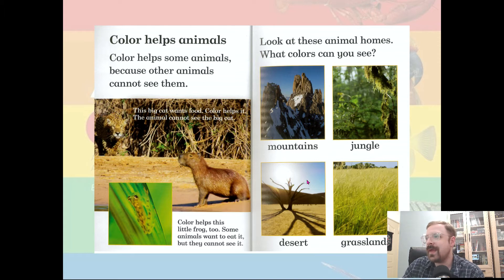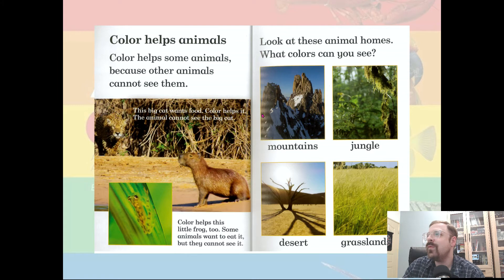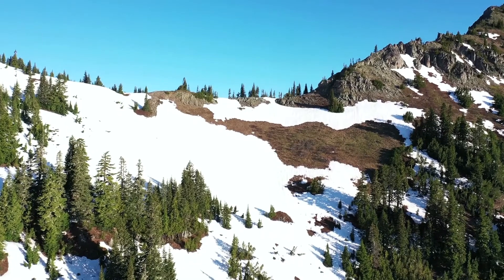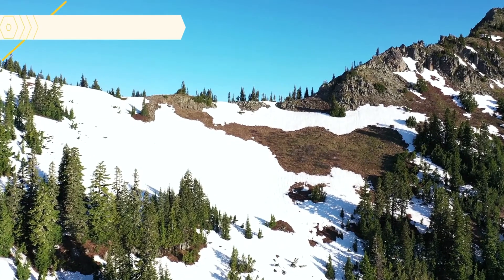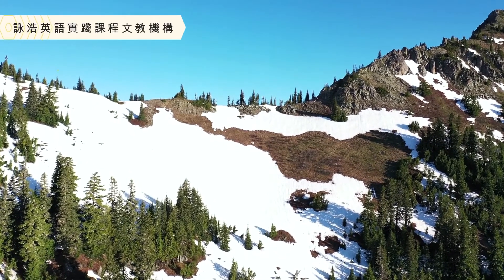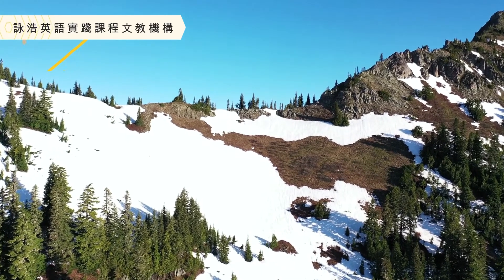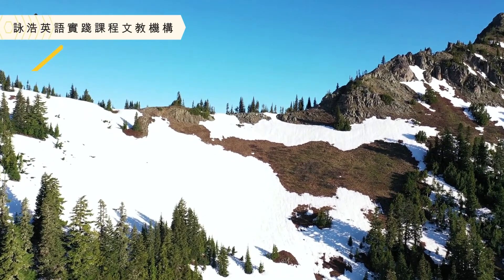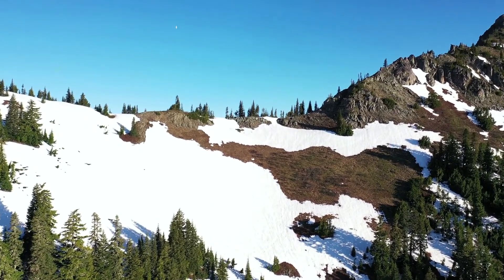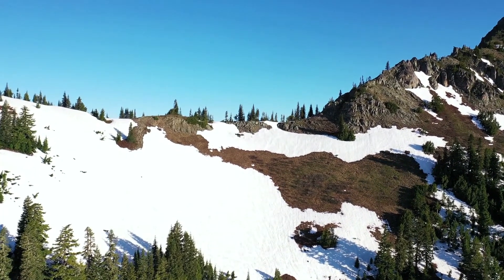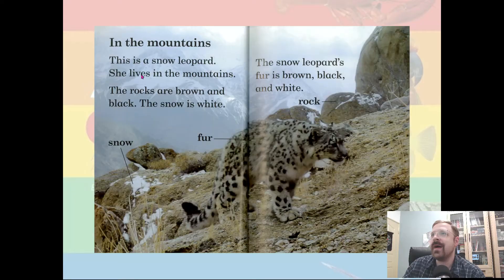Now this one has a lot of brown. And this one, well we can say it has a lot of white and brown. If you count the sky, it also has some blue — in the mountains.